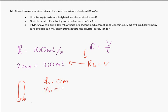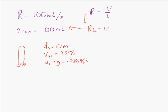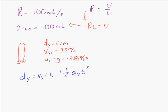Our VYI is 35 meters per second and our AY is negative 9.81 meters per second squared. We have three knowns, and the main thing we need to solve for is time. The formula we'll use is DY equals VYI·T plus ½·AY·T squared. Plugging in: 0 equals 35·T plus ½·(−9.81)·T², which simplifies to 0 equals 35·T minus 4.905·T².